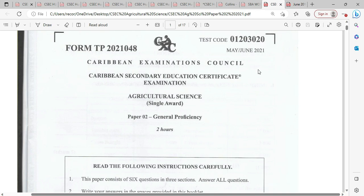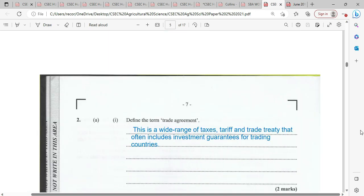Without further ado, let's move on into question number two. Define the term trade agreement. This is a wide-ranging tax, tariff, or trade treaty that often includes investment guarantees for trading countries. It's as simple as that.